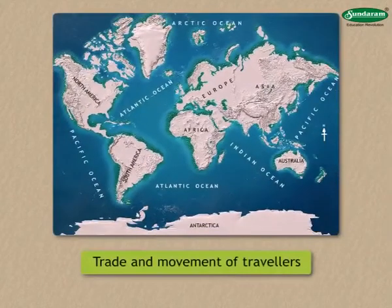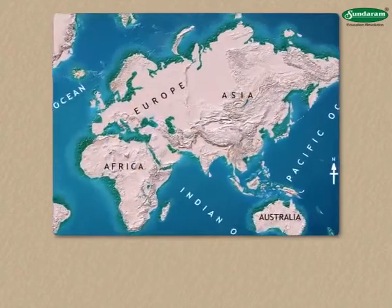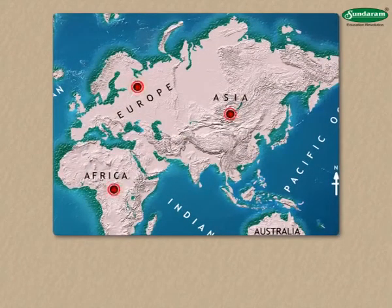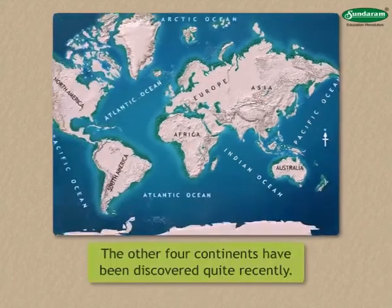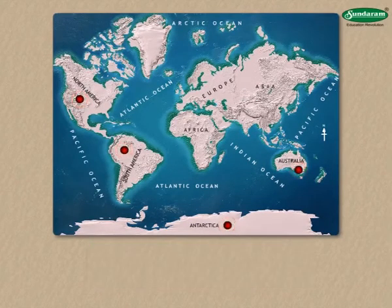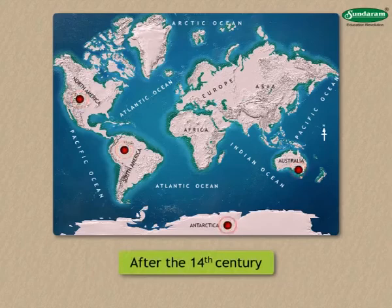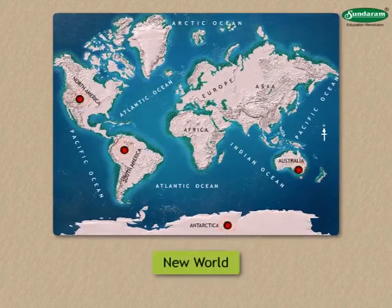Trade and movement of travelers has been going on since ancient times between these three continents. That is why these three continents together are referred to as the Old World or Known World. In comparison, the other four continents have been discovered quite recently, that is, after the 14th century. Hence, these four continents are referred to as the New World.